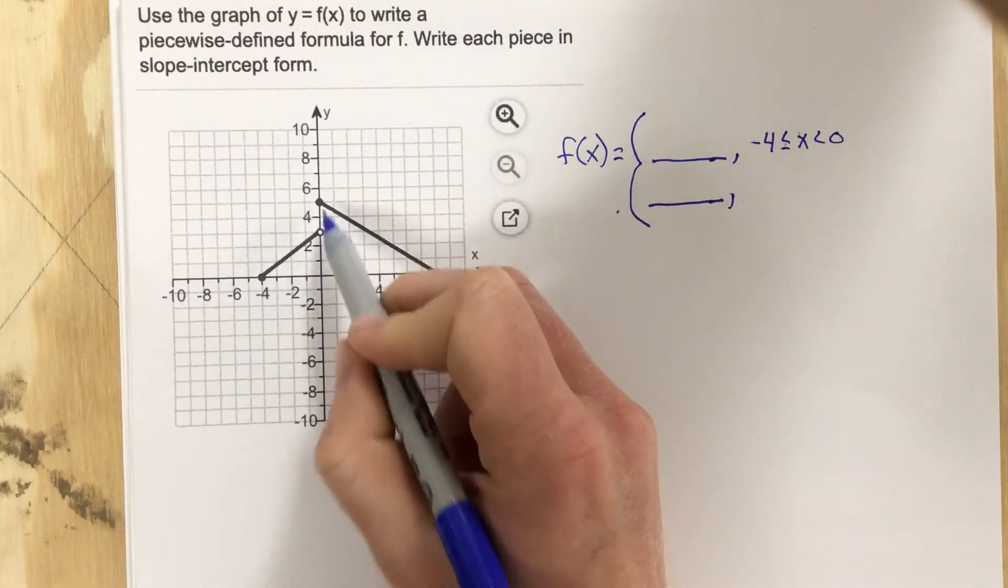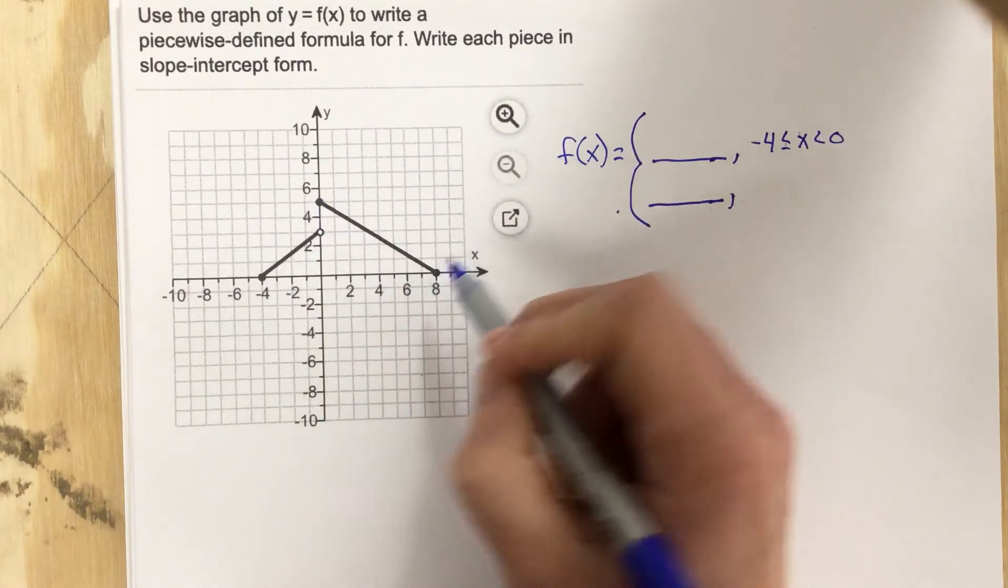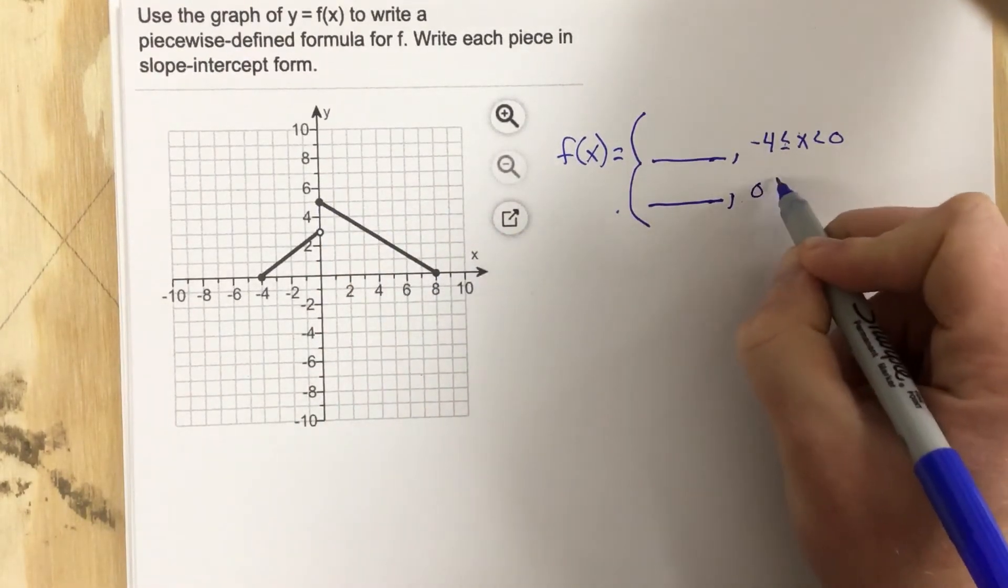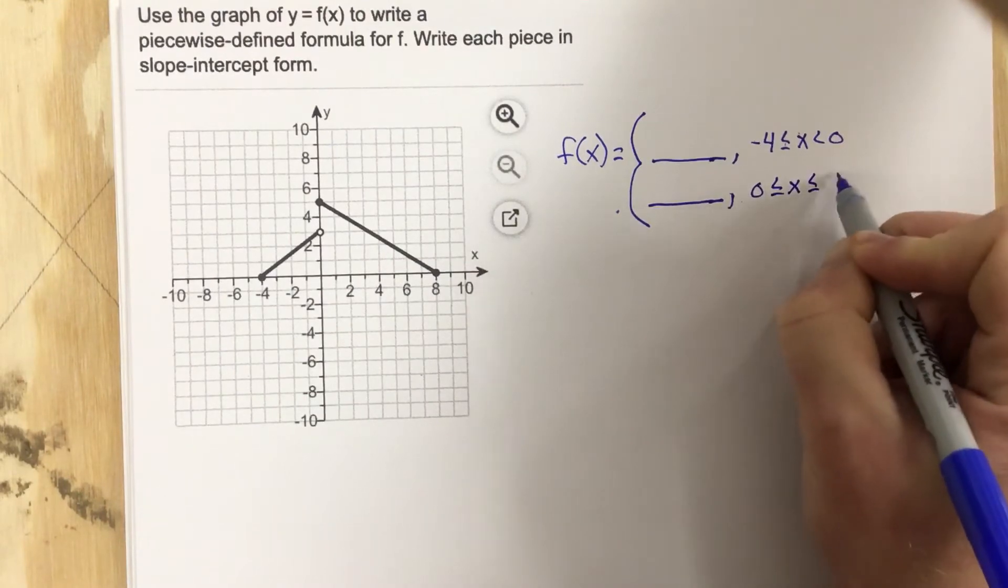This other one then goes from zero to eight, and it includes both, zero and eight. So I say zero less than or equal to x less than or equal to eight.